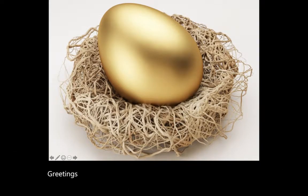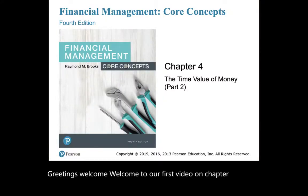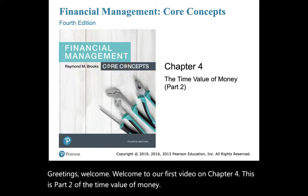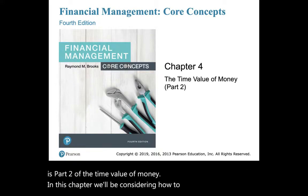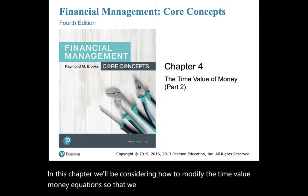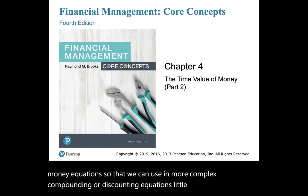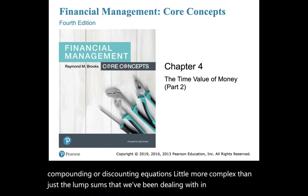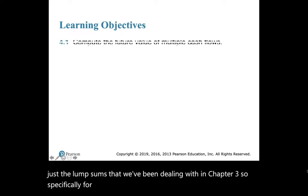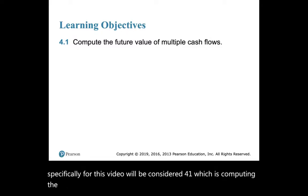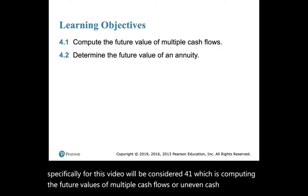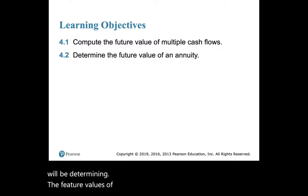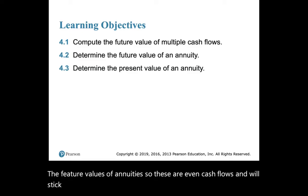Welcome to our first video on Chapter 4 — this is Part 2 of the Time Value of Money. In this chapter we'll be considering how to modify the time value of money equations so that we can use them in more complex compounding or discounting equations, a little more complex than just the lump sums we dealt with in Chapter 3. Specifically for this video we'll cover 4.1 — computing the future values of multiple or uneven cash flows — then the future values of annuities, and the present value of annuity streams.